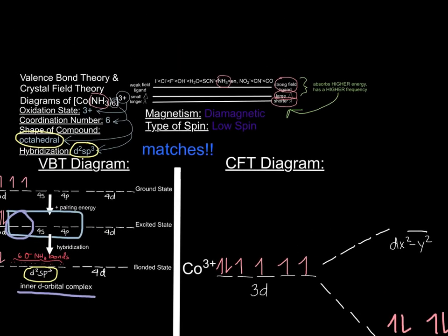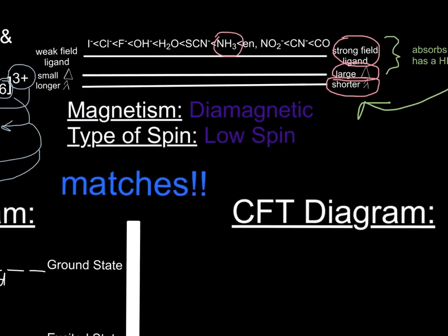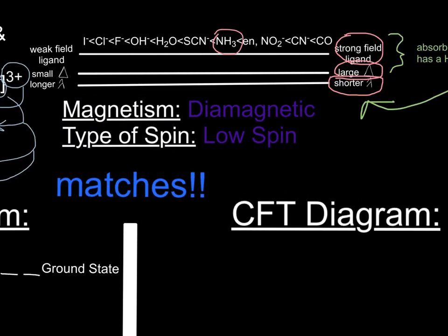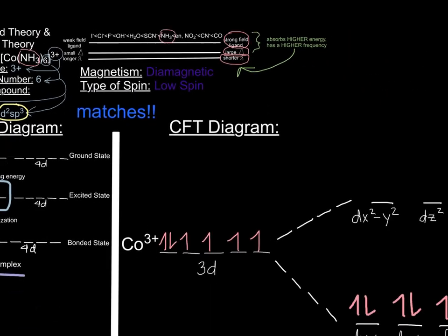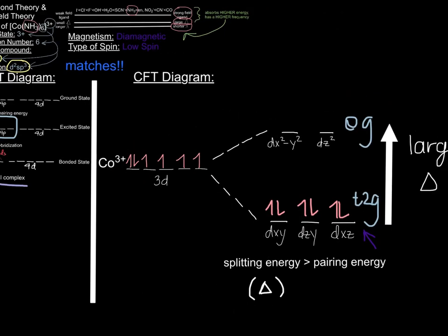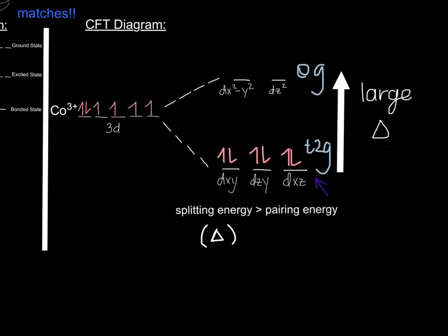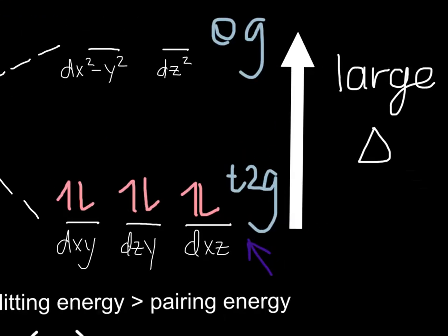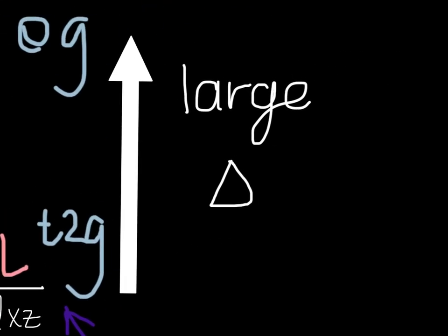Alongside this, this is also a low spin complex due to the fact that in the crystal field theory diagram, there are electrons in the T2G orbital that are paired before the EG orbital, due to a large splitting energy.